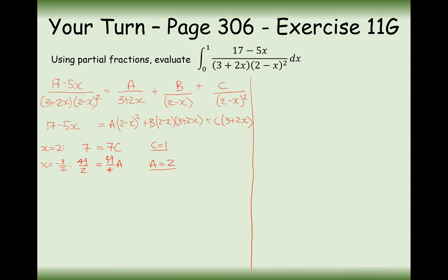We've now got two values of the numerators in our partial fractions, but B is a pretty tricky one. Substituting x equals 2 cancels the B term along with A, and substituting x equals minus 1.5 also cancels the B term along with C. No matter what we do, the B term is going to get cancelled out.